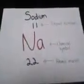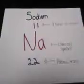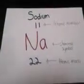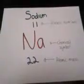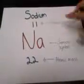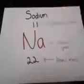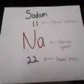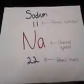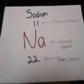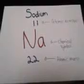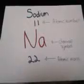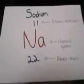Here's an example of an element from the periodic table. Over here we have sodium. We have 11, which is the atomic number, and Na is the chemical symbol. And we have 22 as the atomic mass.